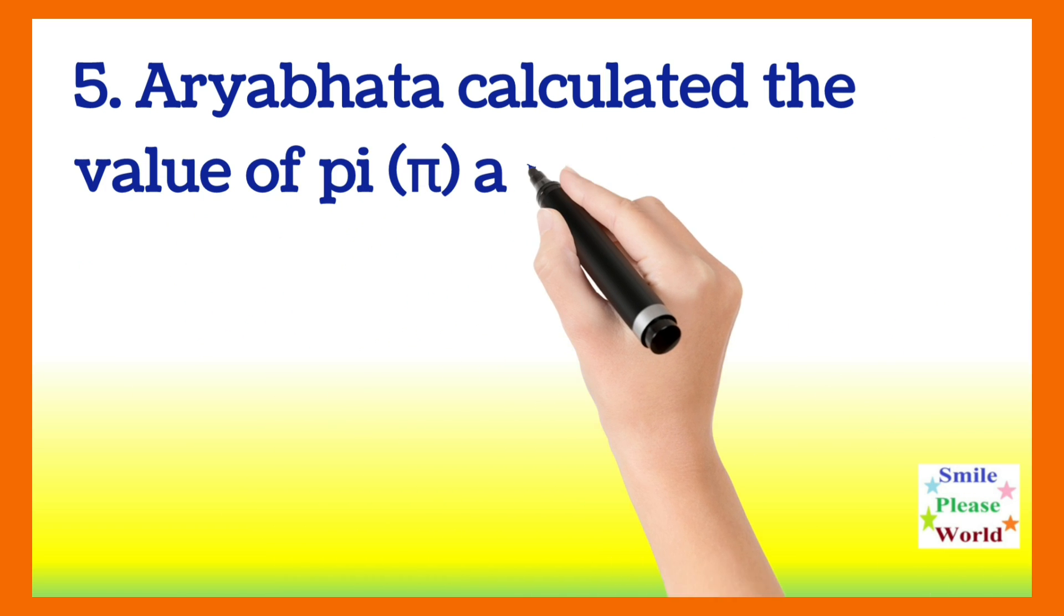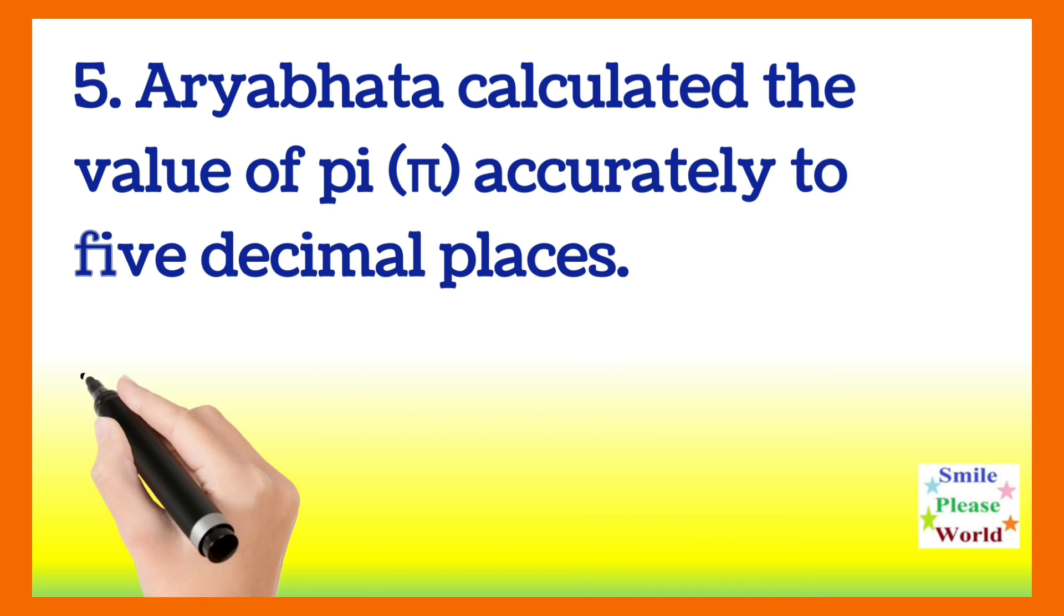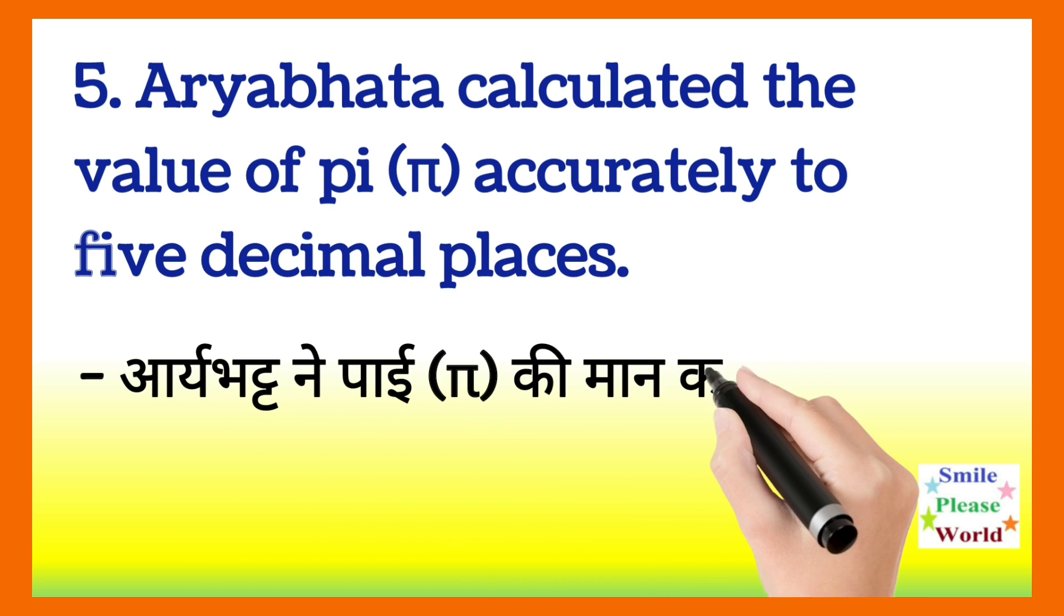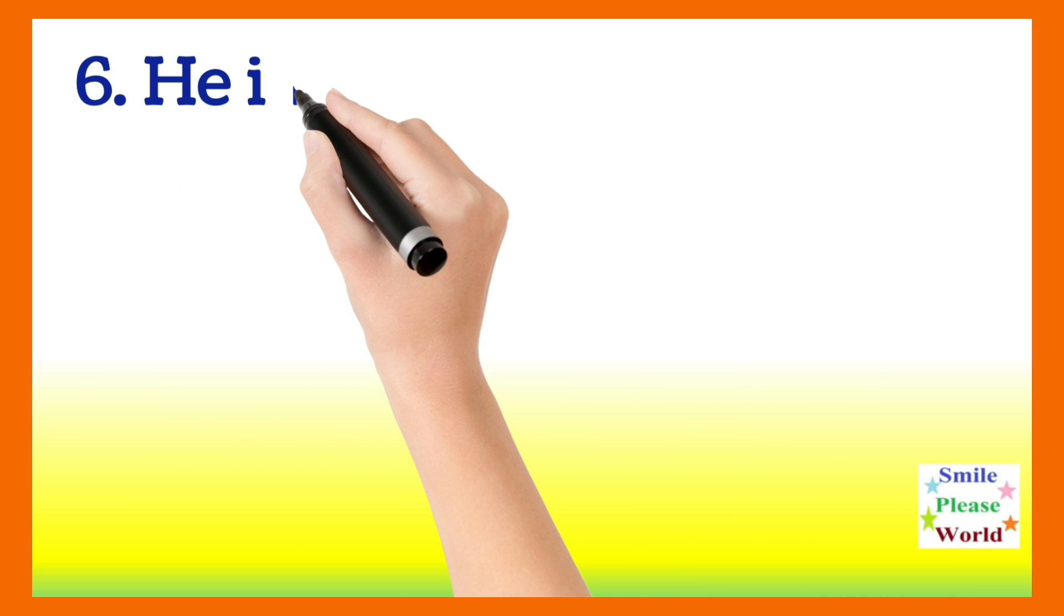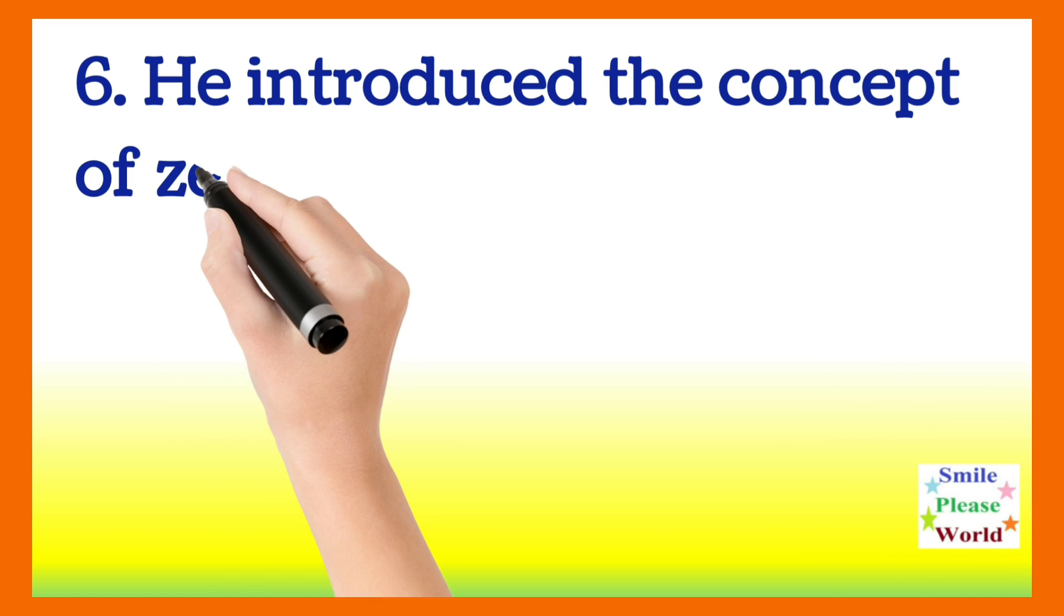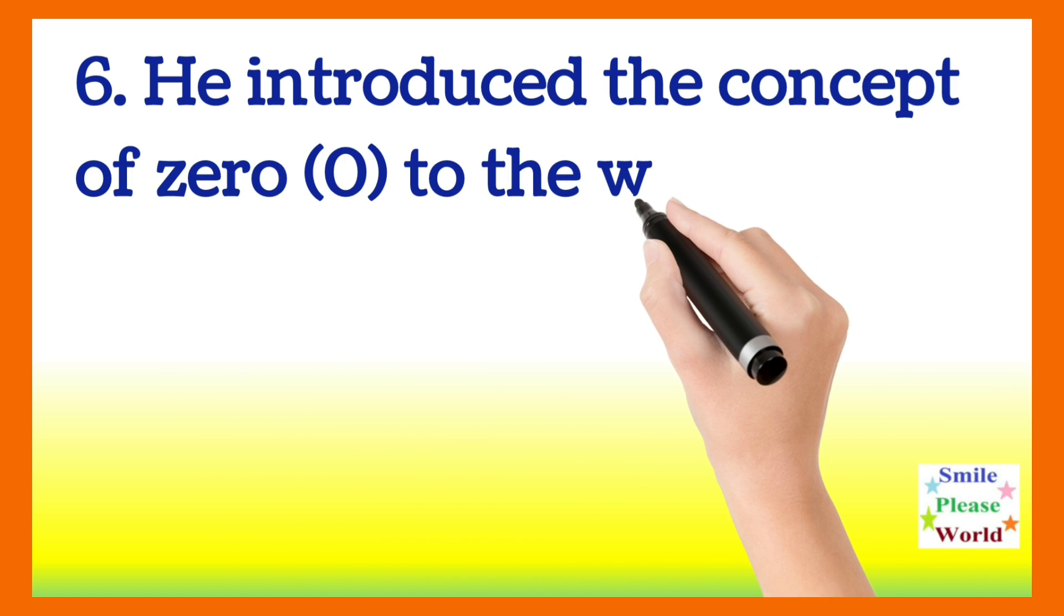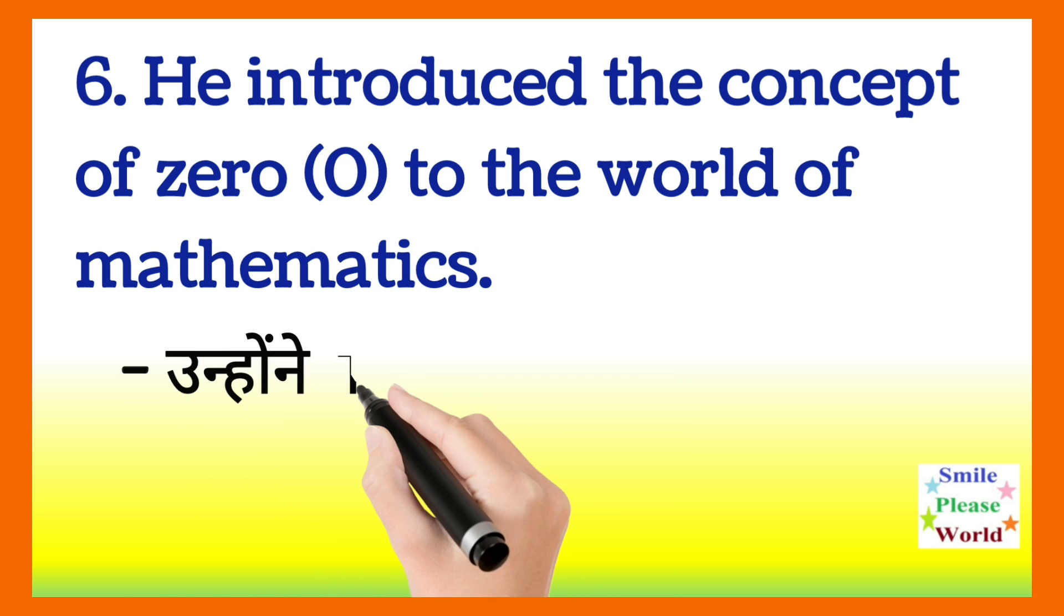Aryabhata calculated the value of pi accurately to five decimal places. He introduced the concept of zero to the world of Mathematics.